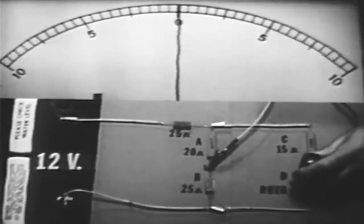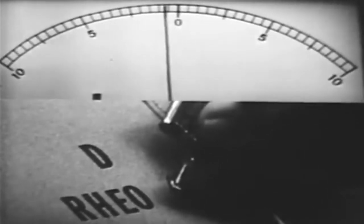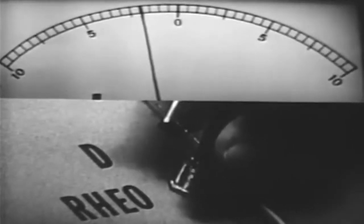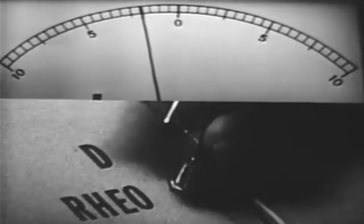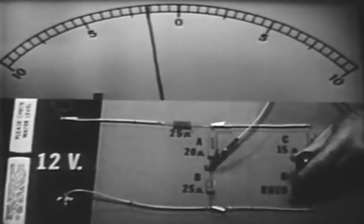If we change the resistance of any of these resistors, we will unbalance the bridge and upset the ratios. Watch the meter as I vary the rheostat. As D increases, point 1 becomes positive with respect to point 2, and current flows through the meter from right to left.